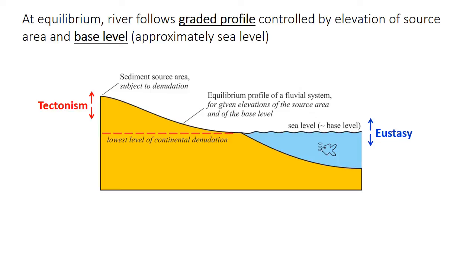So base level is a very important concept in sequence stratigraphy, both for rivers and for sediment accumulation in coastal environments. As I said, it's approximately equal to sea level. So the shape of the graded profile is therefore influenced by the position of base level, which is itself a function of global sea level, or eustasy. The graded profile is also influenced by tectonic subsidence, which can influence base level if the subsidence is occurring near the coastline, or it can affect the elevation of the source area.